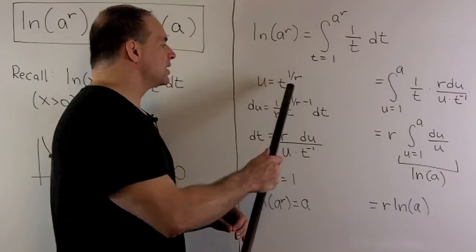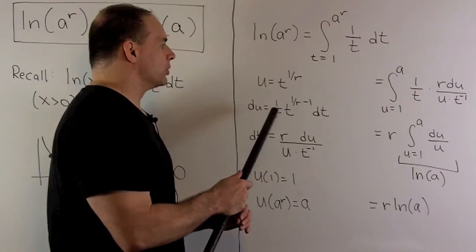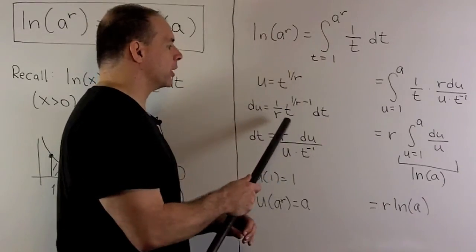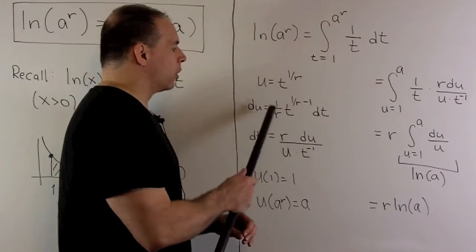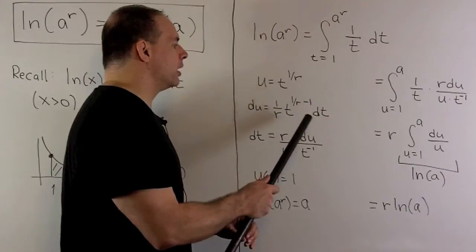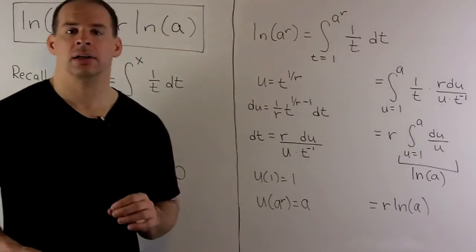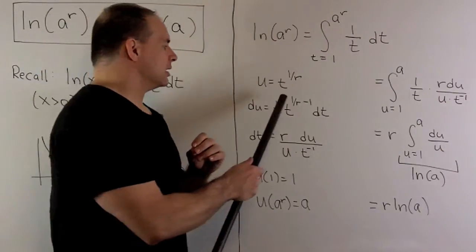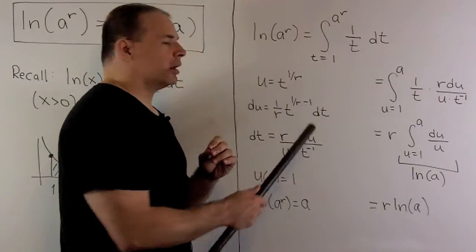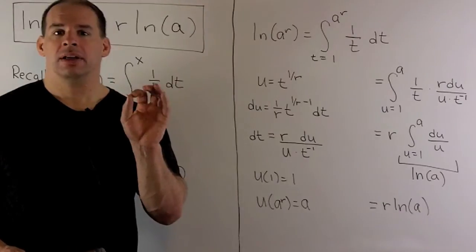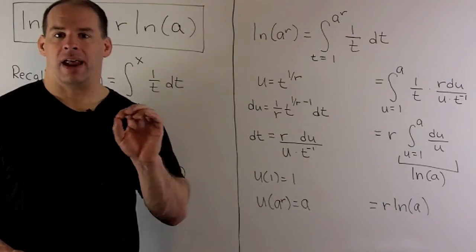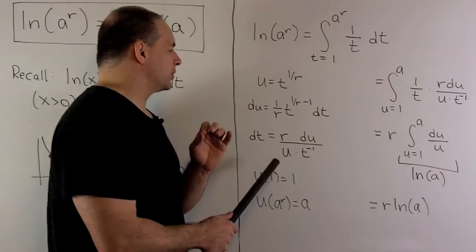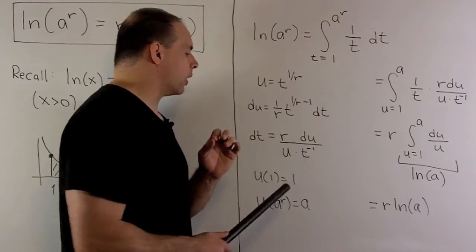Taking the derivative of both sides, I get du equals — applying the power rule, the one over r comes down and I take one off the exponent — so we get one over r times t to the one over r minus one, dt. Pushing everything to the other side, I note that t to the one over r minus one can split up: t to the one over r is u, and I multiply that by t to the minus one. So dt equals r du over u times t to the minus one.